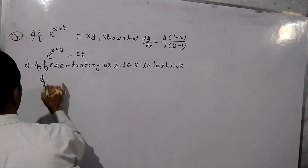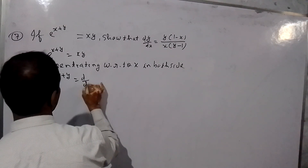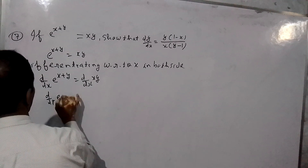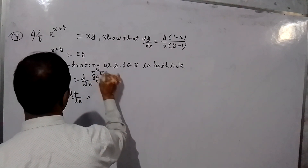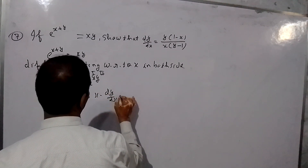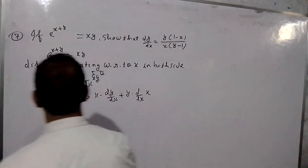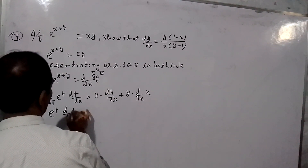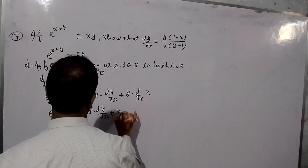So differentiating with respect to x: for e raised to the power x plus y, let t equal x plus y. Then we have e raised to the power t, times dt/dx. Using the chain rule: d/dx of t equals d/dx of (x plus y). The derivative of the first times the second, plus the second times the derivative of the first.